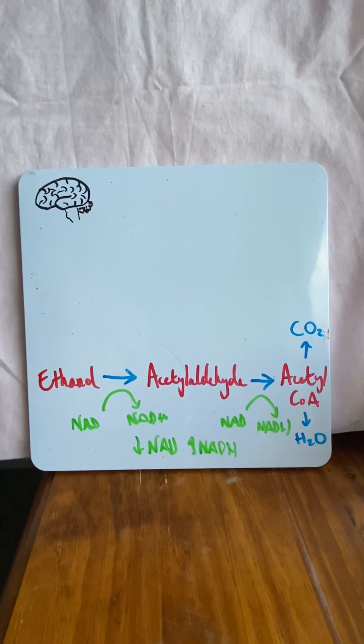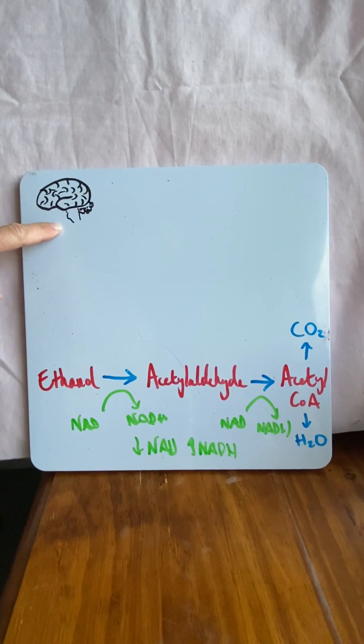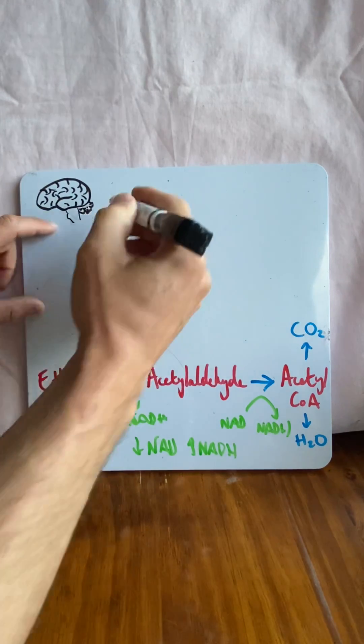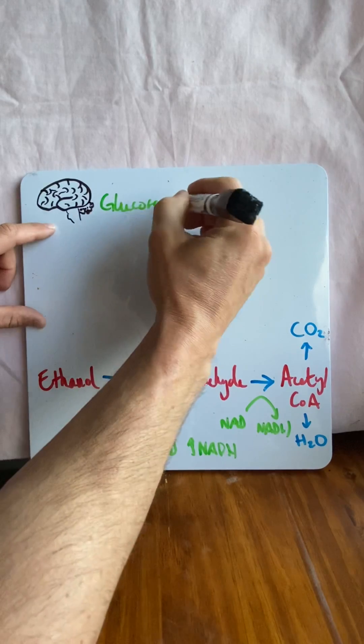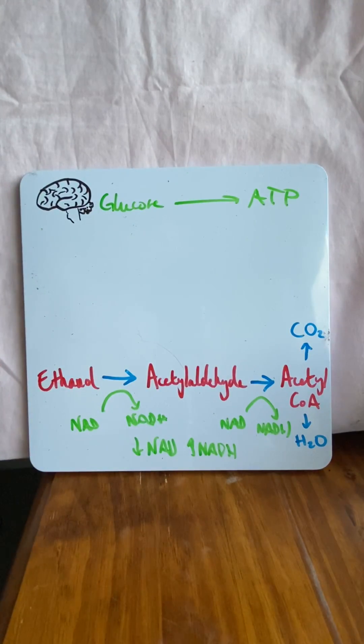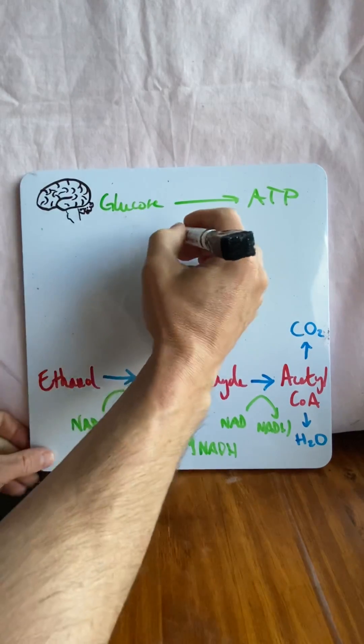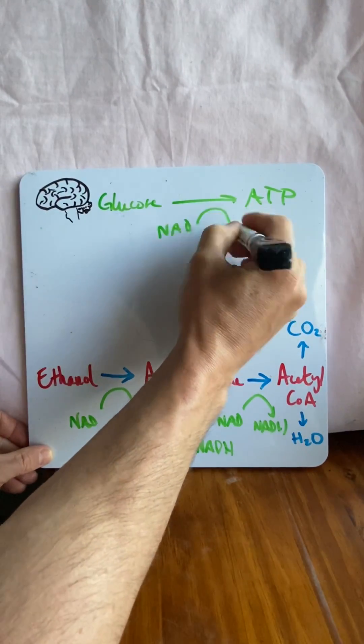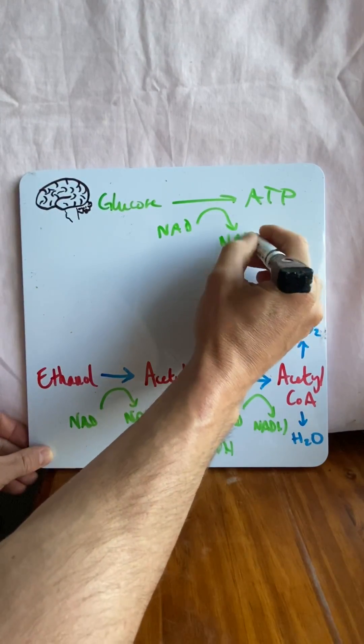Now I want you to think about this. Your brain only uses glucose for energy. Sometimes ketones if you need it, but glucose for energy. So when the brain goes to take this glucose and turn it into ATP, it actually needs a little bit of energy to do this. And the energy it uses is NAD. NAD to NADH, just like the alcohol metabolism.